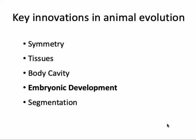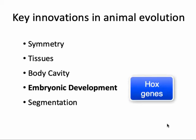Another key innovation in the evolution of animals was the evolution of a controlled embryonic development process. This happened through the evolution of genes that control embryonic development. The appearance of those genes led to the possibility of new forms appearing through just small changes in those developmental genes. The diversity of animals was able to take off once those developmental genes were in place — small changes could result in big changes in the body plan of the organism.